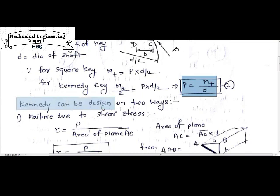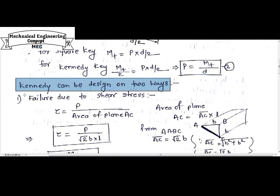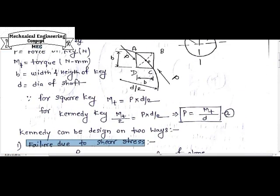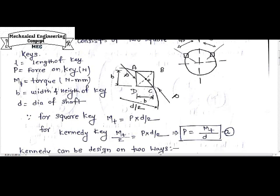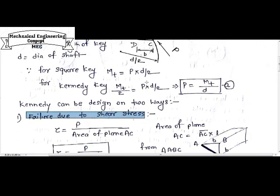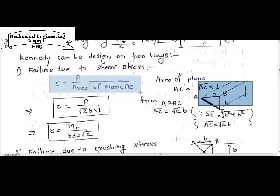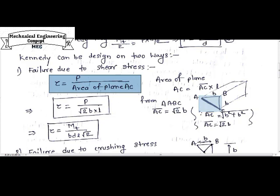So to design a Kennedy Key, there are two ways to design it on the basis of failure. First failure will be due to shear stress on a key. Shear stress will occur due to this force P in this section AC, in plane AC. The section will shear out like this. This is the free body diagram of that section. So the shear stress relation with respect to load and area: tau is equal to load upon resisting area, area of plane AC. AC means this length AC along the length of key.